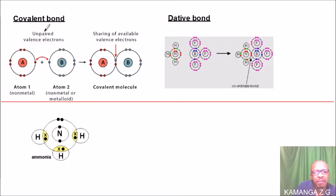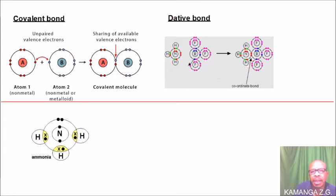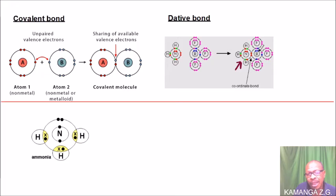This is the covalent bond — you can see here we have A and B. When they combine, both have contributed one electron in their outermost orbital level. This is the dative covalent bond. You can see when they combine, it is only the ammonia molecule which has contributed both electrons that are being shared. So that's the difference.